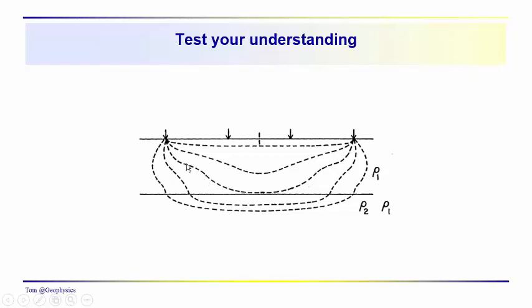Here's another example. Notice what the current flow lines are doing—they're trying to get down into this deeper layer. Again, just thinking in terms of the path of least resistance. We could draw our angles in here. This angle is greater, so ρ2 must be less than ρ1. But we also see that current wants to come down here and flow through this layer. This is the easiest way to get from the source to the sink.